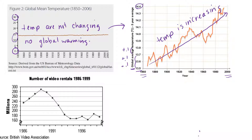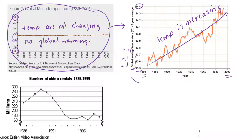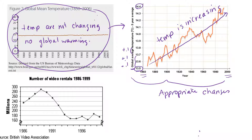If you were a climate change denier, you might choose the zero-based graph to tell your story. But the more appropriate graph for measuring temperature changes is the one that starts at 13.5. So sometimes it's okay to start with a number that's not zero on the y-axis.